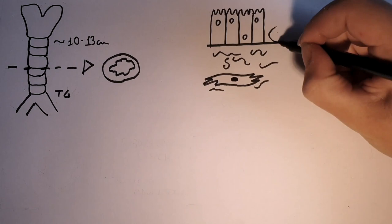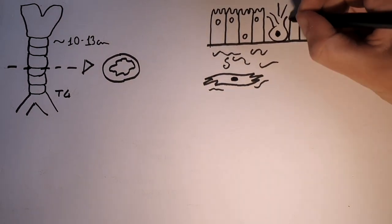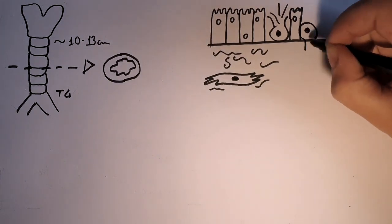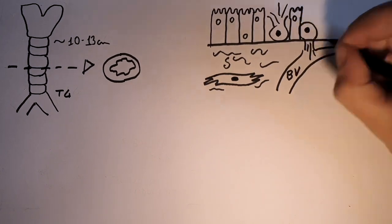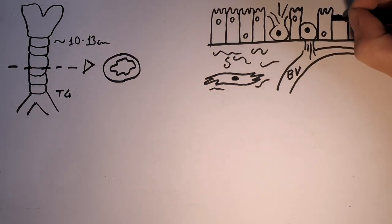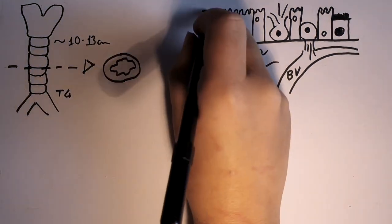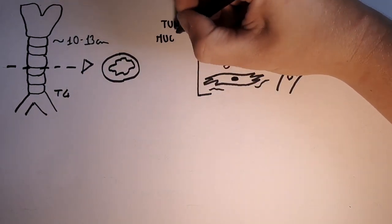This can be unicellular mucous glands called goblet cells, unicellular endocrine glands called granule cells, chemoreceptors, or brush cells as they possess microvilli as an apical specialization.